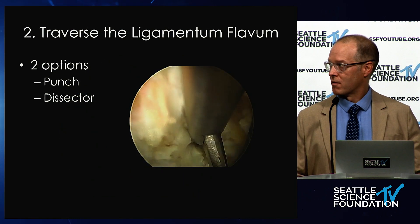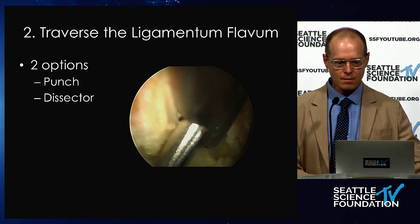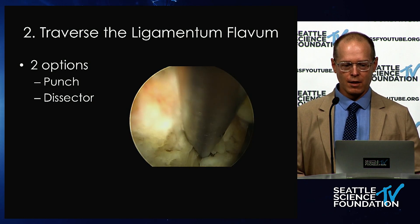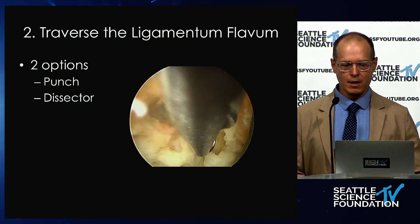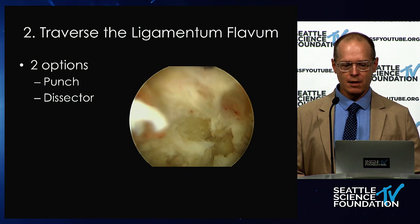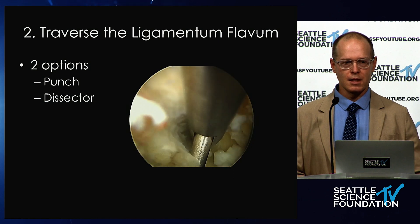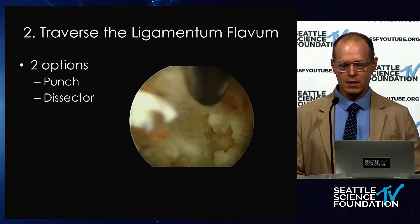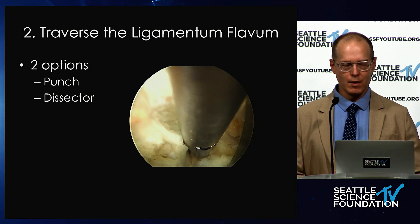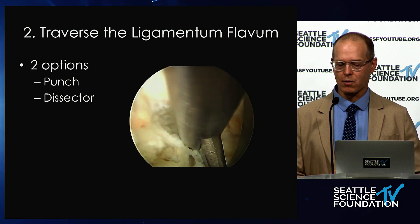Next is traverse the ligamentum flavum, and this is the part where people get very nervous. Using this micropunch, they're worried they're going to come through the ligamentum and bite the dura. The way this punch is shaped, it has a blunt lower jaw that sticks out farther than the cutting portion. So although technically possible, the likelihood of punching the dura is low because you're going to push that away.